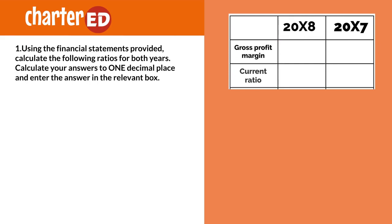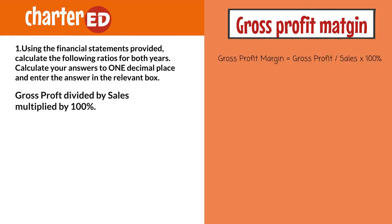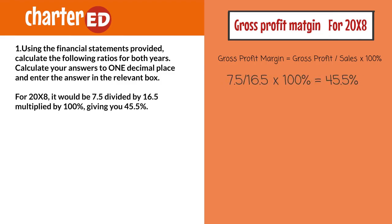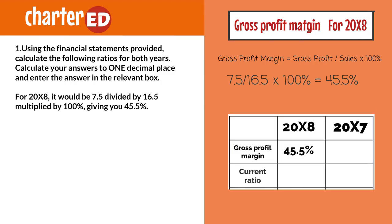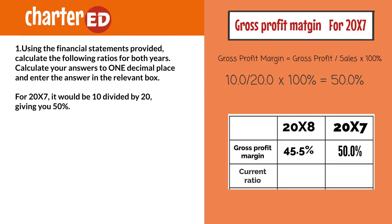Using the financial statements provided, calculate the following ratios for both years to one decimal place. Let's start with the gross profit margin — you remember the formula: gross profit divided by sales multiplied by 100%. For 20X8 it would be 7.5 divided by 16.5 multiplied by 100%, giving you 45.5%. For 20X7 it will be 10 divided by 20, giving you 50%.